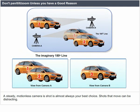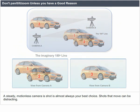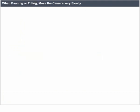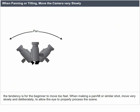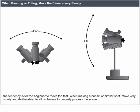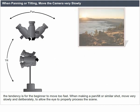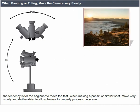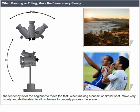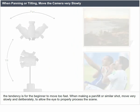Shots that move can be distracting. When panning or tilting, move the camera very slowly. The tendency is for the beginner to move too fast. When making a pan, tilt, or similar shot, move very slowly and deliberately to allow the eye to properly process the scene.